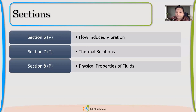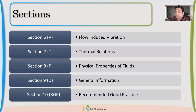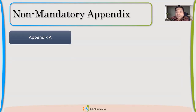Section eight talks about physical properties of lots of fluids used for heat exchangers. Section nine is general information — you'll find bolt-related dimension tables like D5, which we use for flange design, and lots of other useful tables. Section ten is also very important and we'll go through these sections as we do this course. The non-mandatory appendix covers tube sheet design.